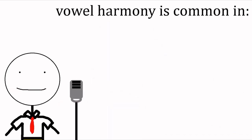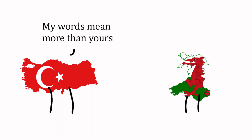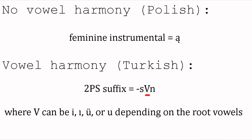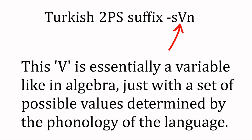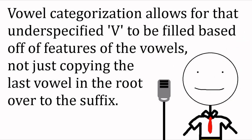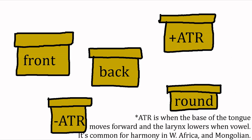Vowel harmony typically shows up in case-heavy agglutinative languages, where words can pack more semantic content through endings. Many languages have endings, but the difference here is that instead of having a set ending, vowel harmony allows the base form of the ending to have underspecified vowels. What this means is that features of preceding vowels in the root word will carry over to vowels in the ending. Languages with vowel harmony often categorize their vowels for the purposes of this — for example, front vs. back vowels, or plus and minus ATR vowels.